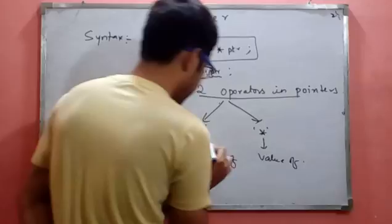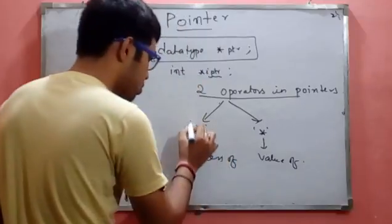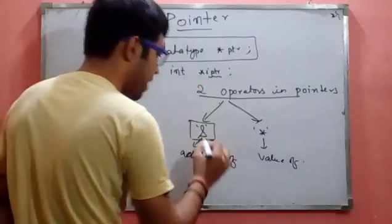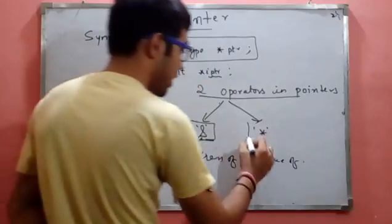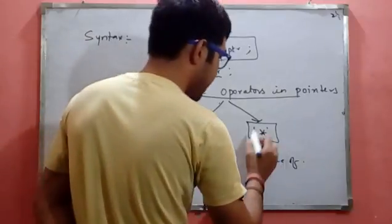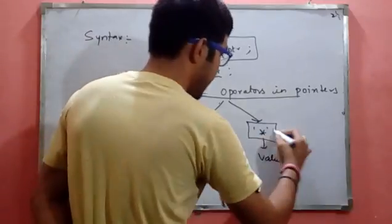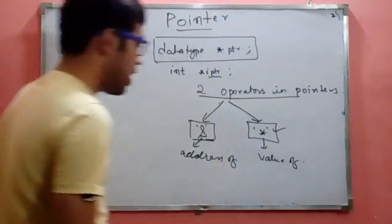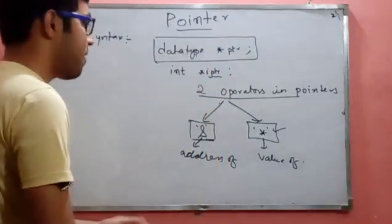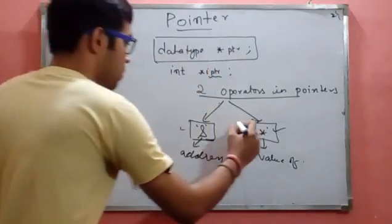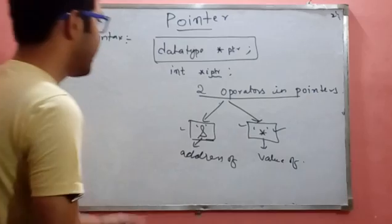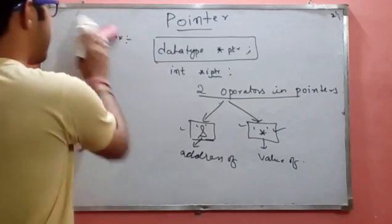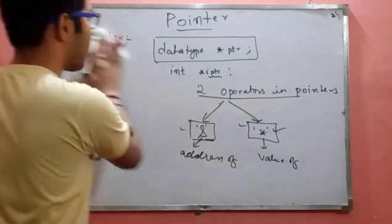A pointer is used to pass the address of a variable, and it is also used to pass the value of a variable. I will describe both of them in detail, don't worry about it.